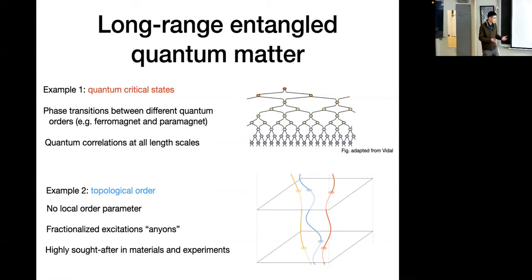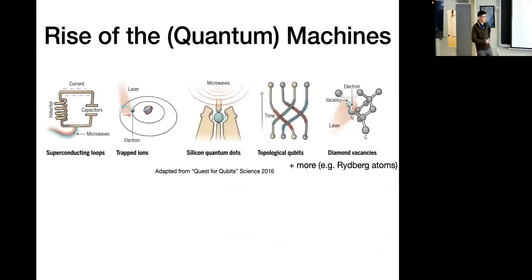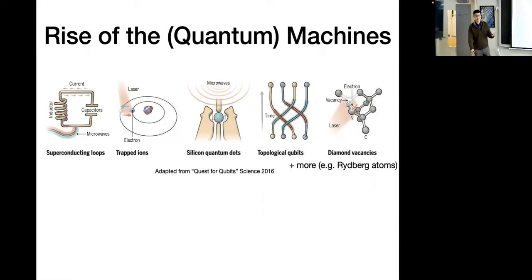Due to all these interesting properties of long-range entangled phases, these states are highly sought after in real materials and experiments. Until very recently, trying to realize these interesting states tended to be exclusively in the domain of solid-state materials. However, recently there have been a lot of exciting developments in quantum simulation and quantum computing. Many of these different approaches toward realizing systems of artificial qubits are highly controllable — you can realize unitary gates and do single-site measurements, and much more. These highly controllable quantum platforms provide a relatively new context for realizing long-range entangled states.